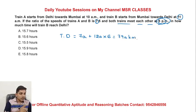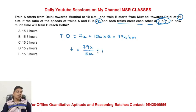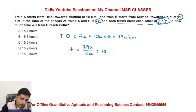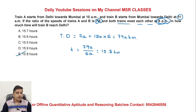In how much time will Train B reach Delhi? Time taken: speed is 5A, distance is 79A. So 79A divided by 5A. Calculation gives 15.8 hours. 15.8 hours — option E is the final answer for this question.